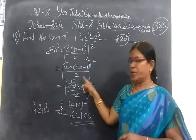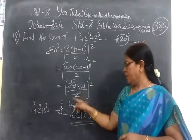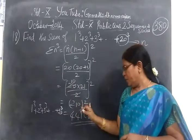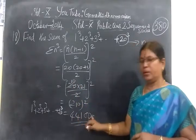So 20 bracket 20 plus 1 by 2 the whole square. 20 by 2 is 10. So 10 into 21 is 210. If you make its square, 441 then double 0.